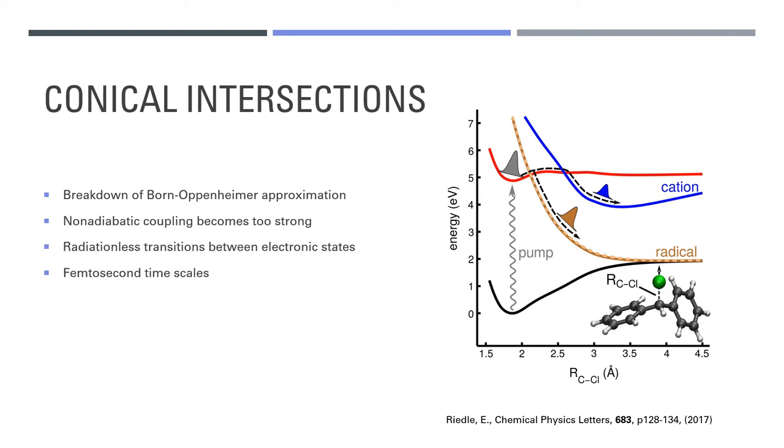Conical intersections arise from degeneracies of the potential energy surfaces. This leads to the breakdown of the Born-Oppenheimer approximation as the non-adiabatic coupling terms tend to infinity as the difference in electric potential energies becomes very small. There is no longer a separation in the timescales between the electronic and the nuclear degrees of freedom and the wave function can no longer be factored into electronic and nuclear terms.